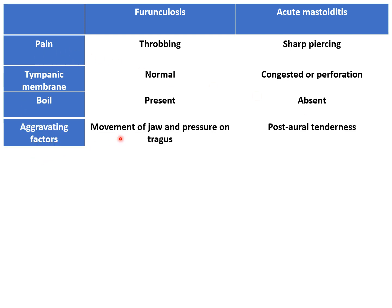Regarding aggravating factors: movement of the jaw during chewing, pressure on the tragus, or pulling the pinna will all aggravate the pain in furuncylosis. The patient will have excruciating pain when we press the tragus or pull the pinna. While in acute mastoiditis, the patient complains of tenderness on post-auricular palpation — when we press the mastoid area, tenderness is suggestive of mastoiditis.